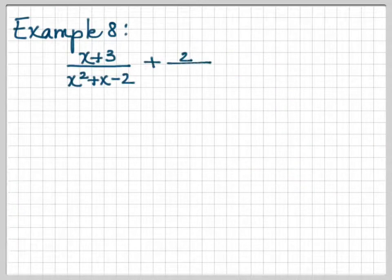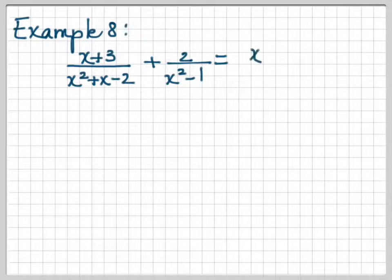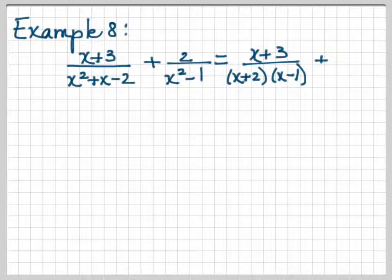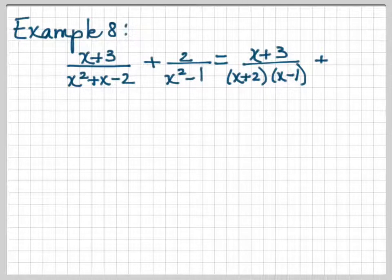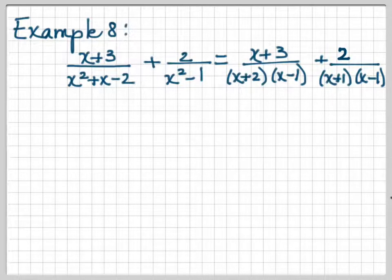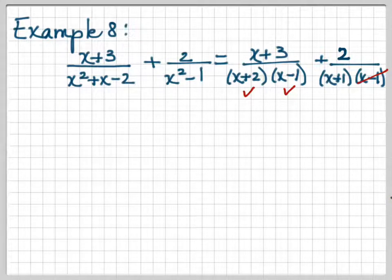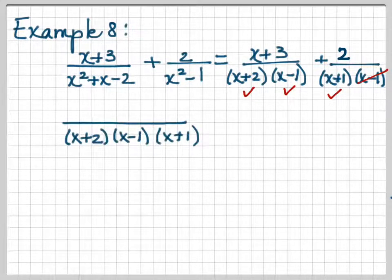Here's example number 8: (x + 3) over (x² + x − 2) plus 2 over (x² − 1). We factor the first denominator to get (x + 2)(x − 1), and the second becomes (x + 1)(x − 1). Looking at all the factors across both denominators, we have (x + 2), (x − 1) — we can skip the second (x − 1) since we already have it — but then we have another (x + 1). So our LCD will be (x + 2)(x − 1)(x + 1).